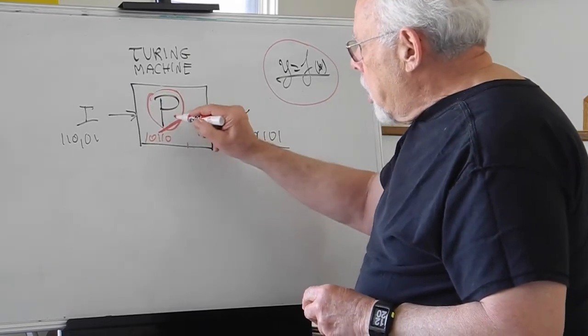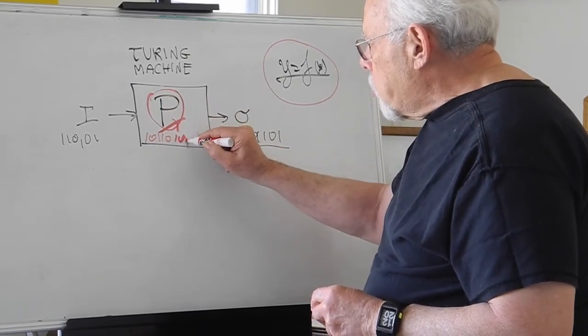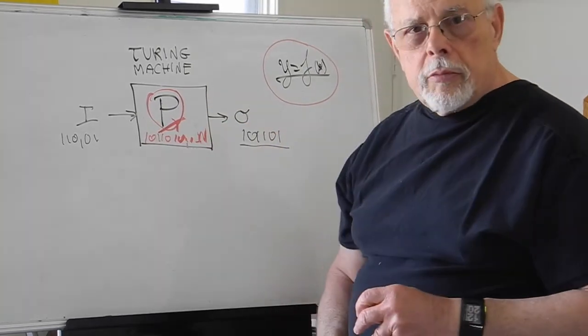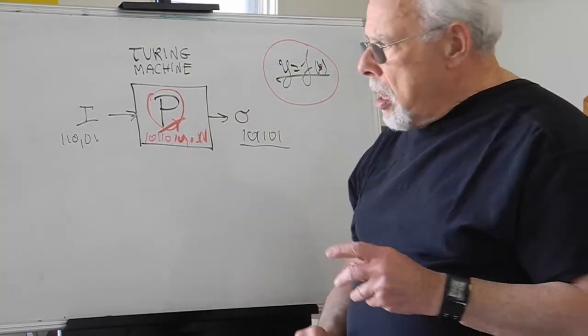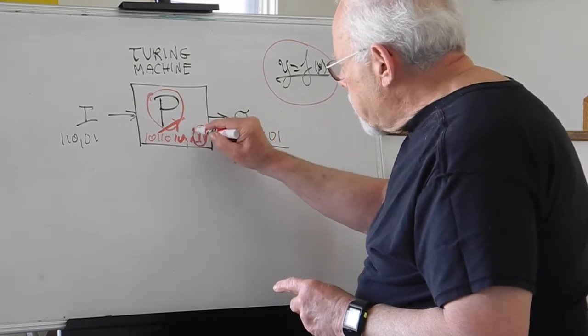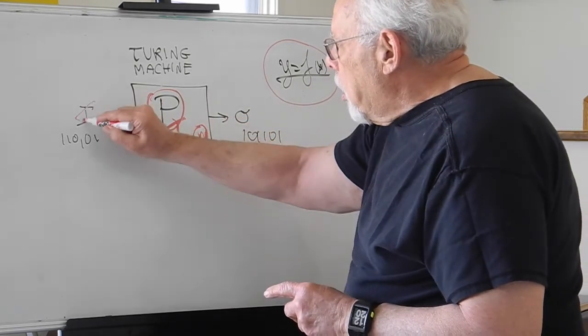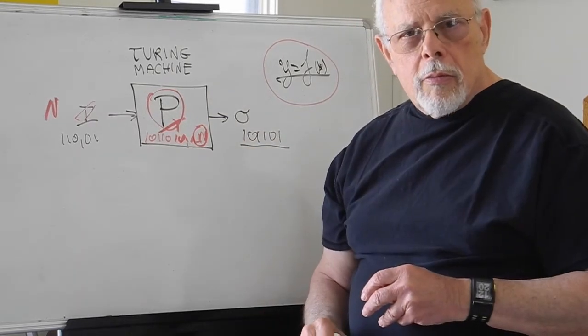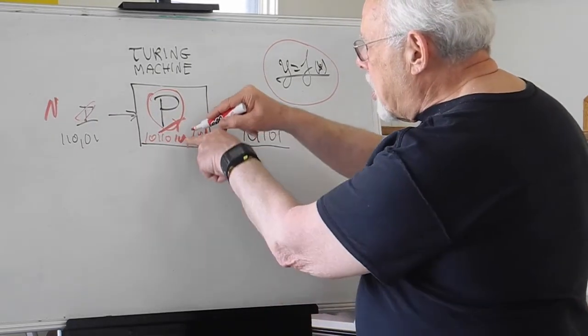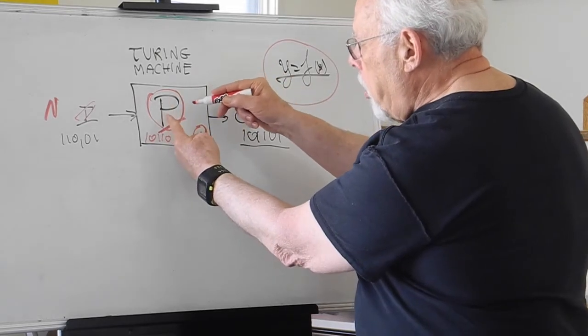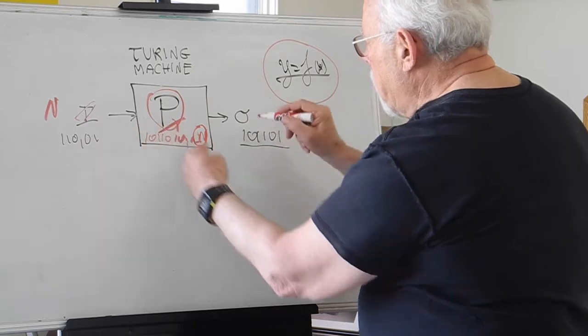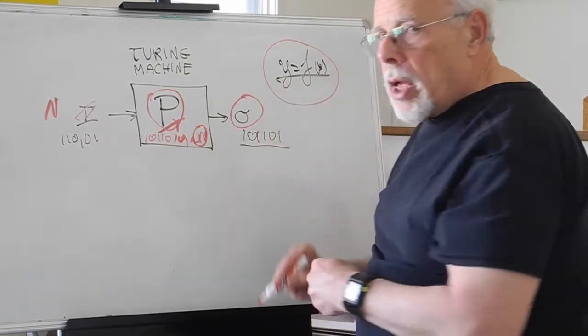Whatever the program is, it can be reduced to a string. Let's call the string N. Now, what if we take this N and feed it as an input? The same number that represents the program will be fed as an input. Now, something will come out, or not.